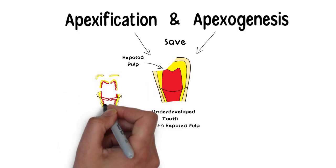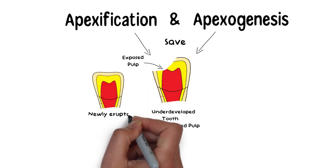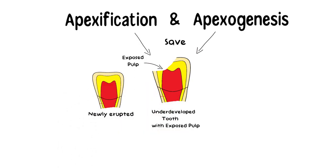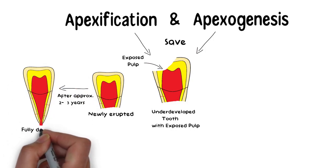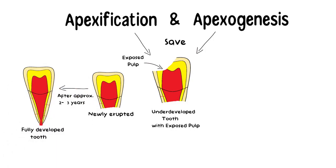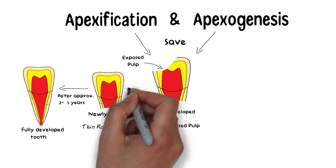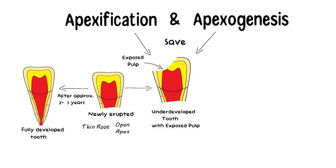When a tooth erupts in the oral cavity, its roots aren't fully developed yet and it takes about 2-3 years for the root to fully develop. At this stage, a tooth has an underdeveloped thin root with a wide apex that is known as an open apex. If this developing tooth gets a pulpal exposure, then this open apex can provide a serious challenge in the treatment of the tooth.